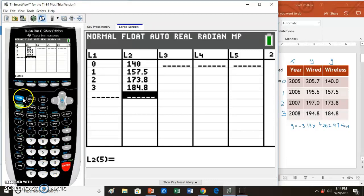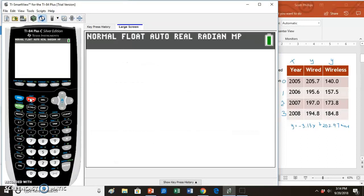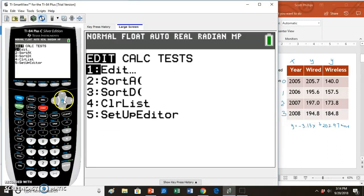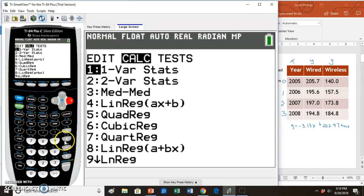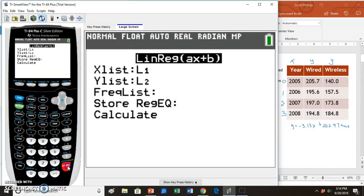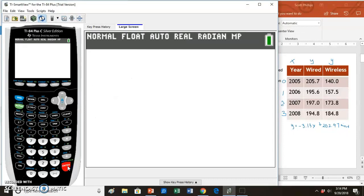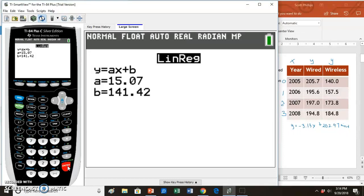I'll quit, and then I'll run a regression. So stat, over to calculate, and I'll arrow down to option 4. Enter through these. And my calculator does the work for me, and I have values for A and B which I'll go back and write on my PowerPoint slide.